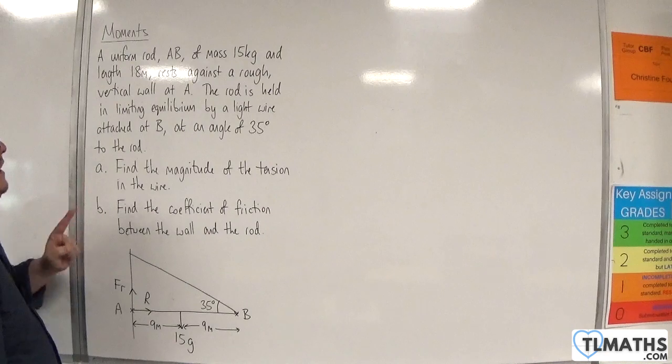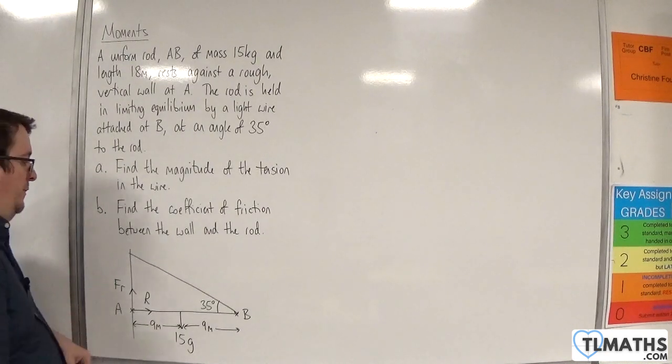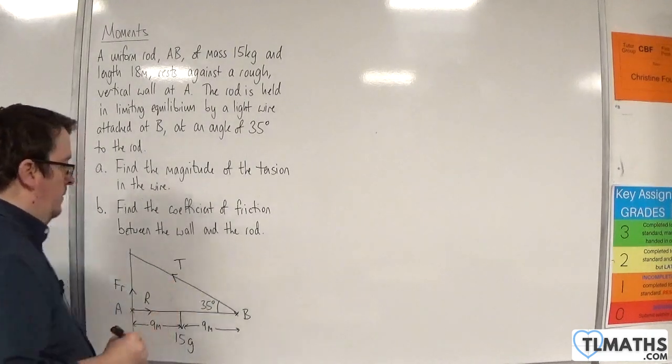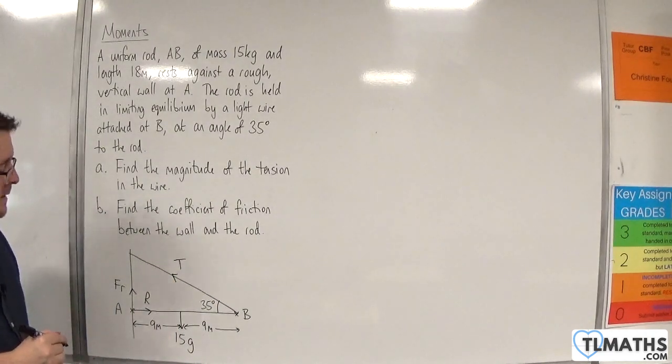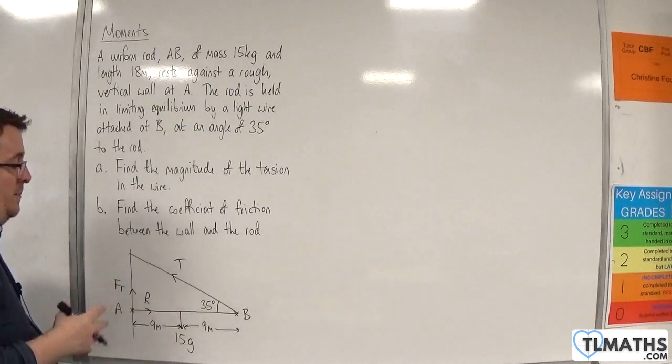The rod is held in limiting equilibrium by a light wire attached at B at an angle of 35 degrees to the rod. So there will be tension in the wire. This is a diagonal force, so it's one that you're going to want to split up into its components.